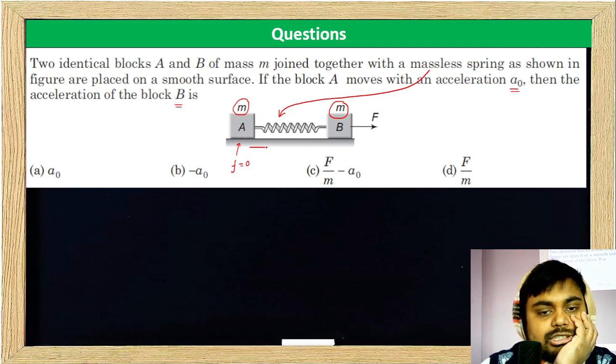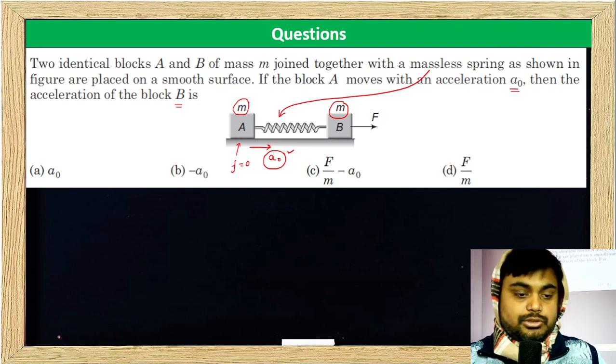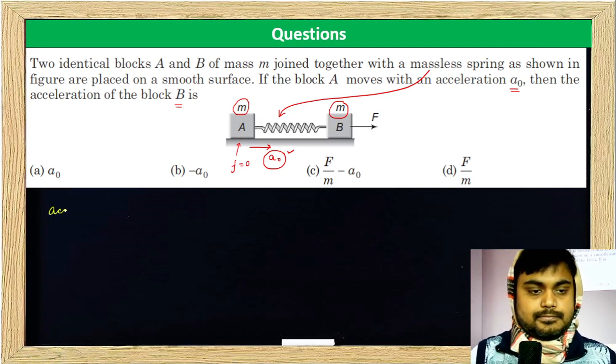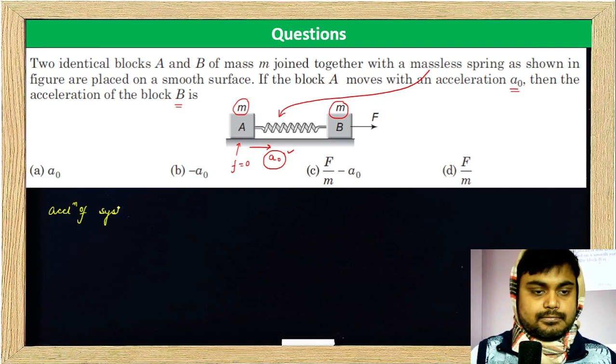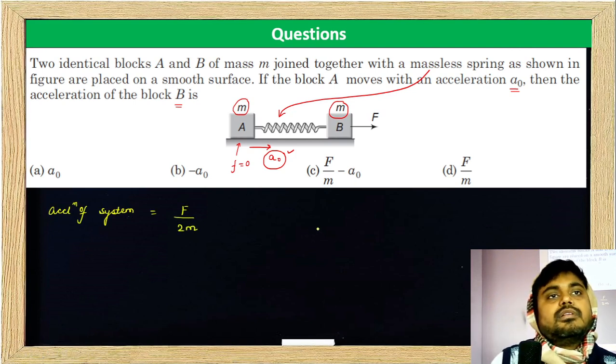If block A moves with acceleration A₀, yes or no? Look at this whole system, what will happen? F divided by 2M, yes or no?